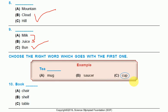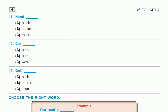Tea: mug, saucer, or cup. Teacup. Book: chair, shelf, table. Book you keep on the shelf. Hand: pinch, shake, or touch. The word is handshake.